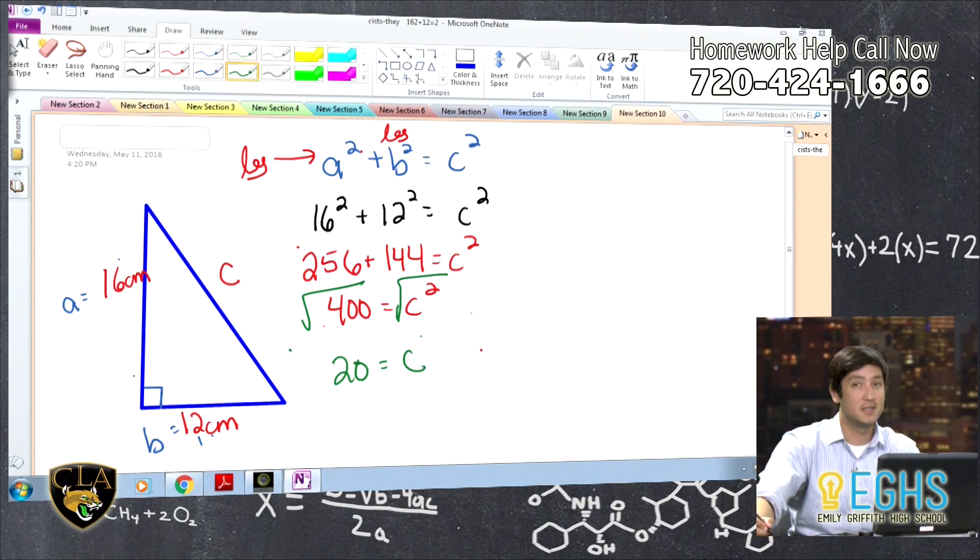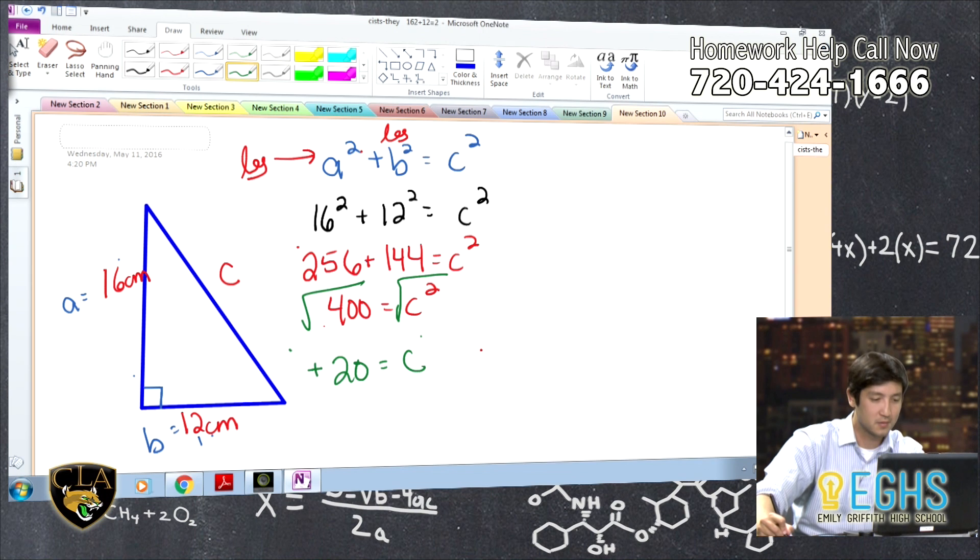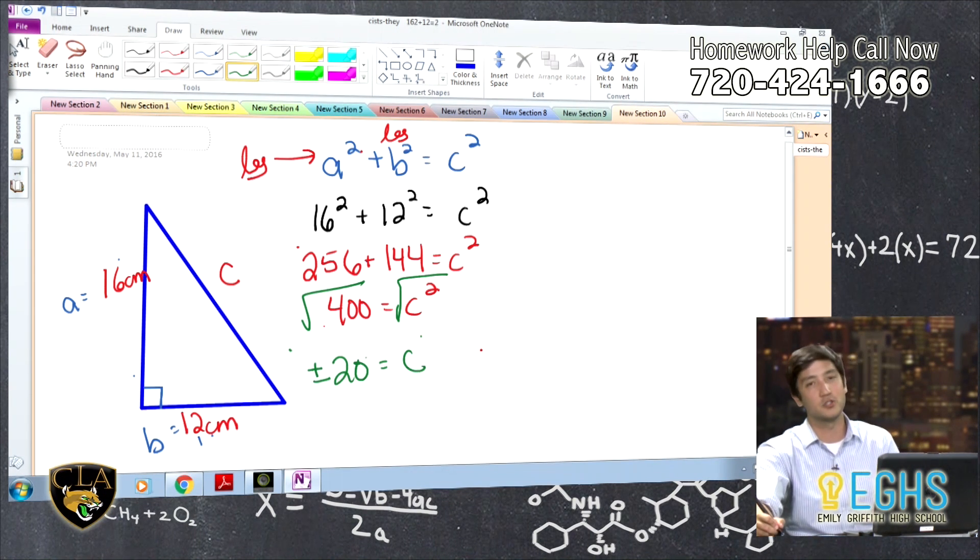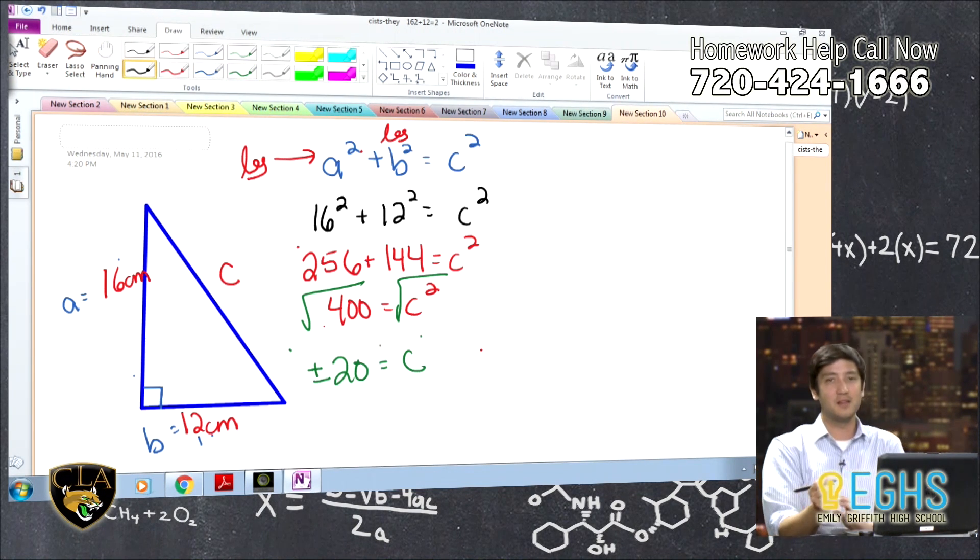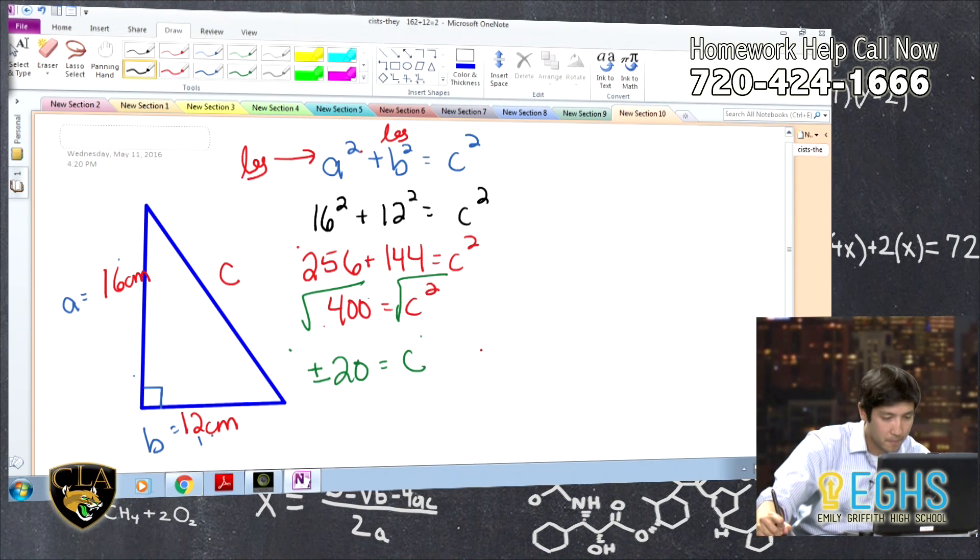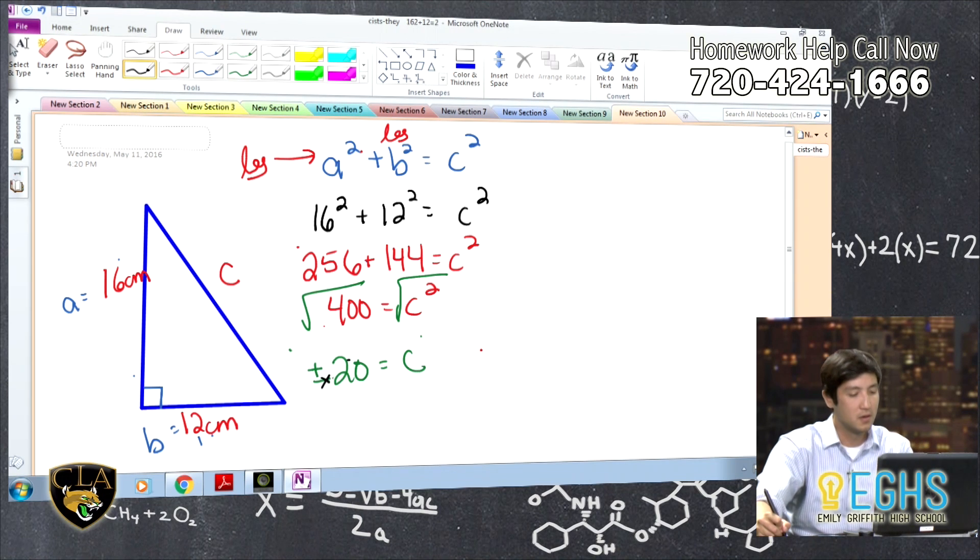And again, I always like to throw this out there. Technically, algebraically and mathematically, this would be plus or minus 20 because positive 20 squared is 400 and negative 20 squared is 400. But because we're talking about the lengths of pieces of this triangle, we think about this negative number and it doesn't make any sense. So our answer is just going to be 20.